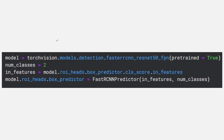Whenever you do fine-tuning of Faster RCNN, you will see this part — it basically comprises four lines. The first line gets the Faster RCNN module, and the most important part is the Fast RCNN predictor. The first line downloads the pre-trained model, and then you need the number of classes and the number of in_features, which I'll show you in the next slide.